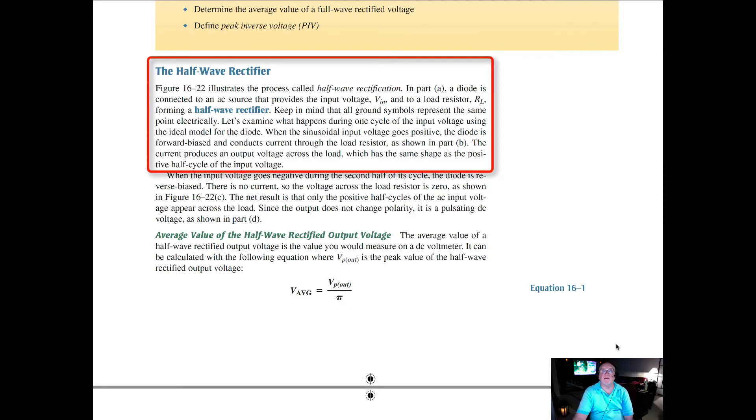We call that half wave rectification. In part A in the diagram, a diode is connected to an AC source that provides the output voltage, the voltage in, and to a load resistor RL forming the half wave rectifier. Keep in mind that all ground symbols represent the same point electrically.